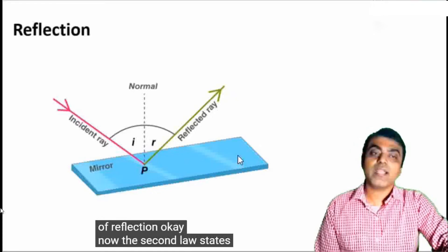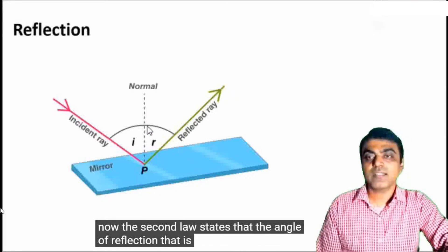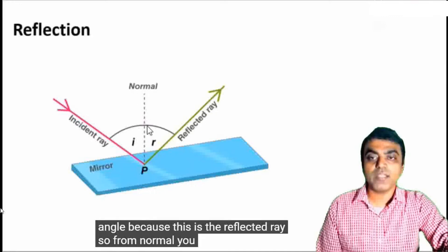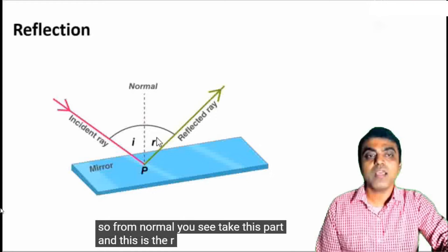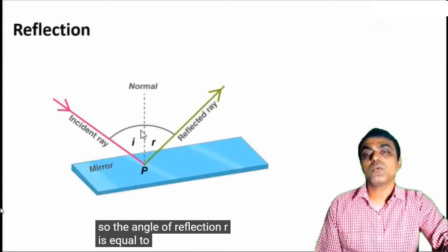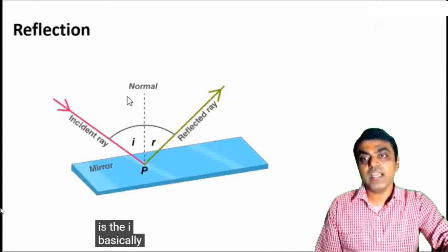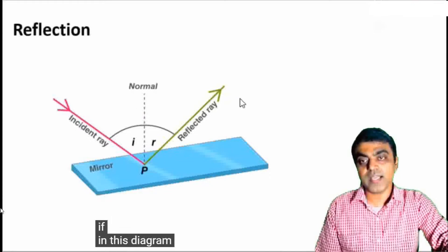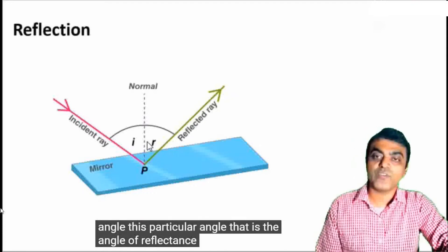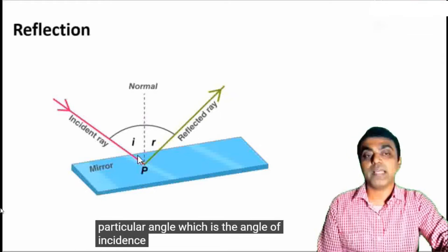The second law states that the angle of reflection — from the normal, this is the angle R — is equal to the angle of incidence, that is the angle I. If you see in this diagram, this particular angle, which is the angle of reflectance, is equal to this particular angle, which is the angle of incidence.